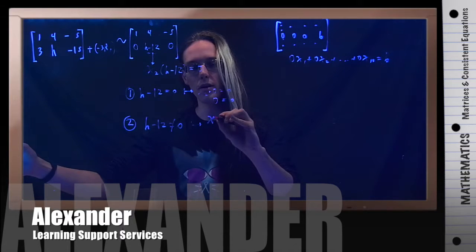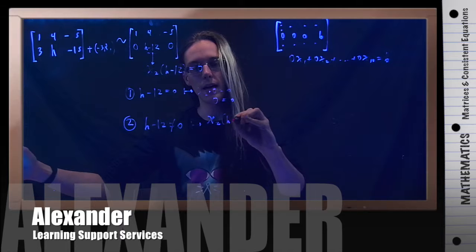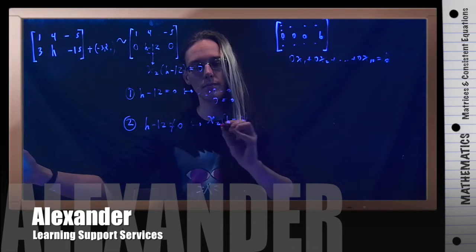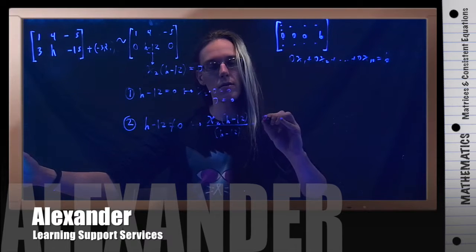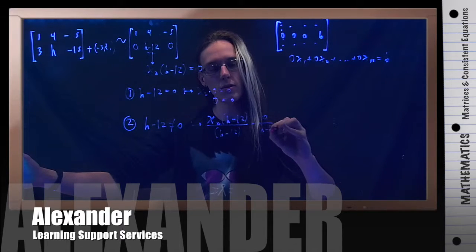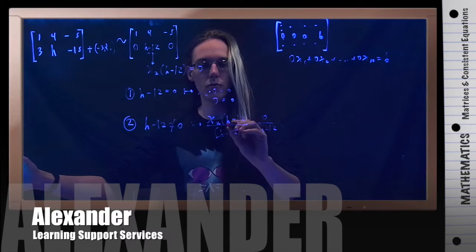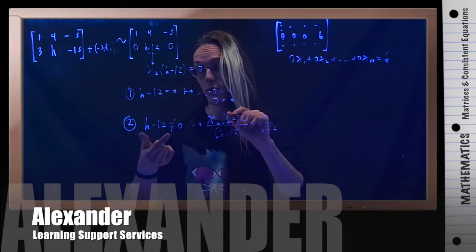So I could solve the equation x2 times h minus 12 by dividing both sides of this. h minus 12 equals 0 over h minus 12. Those would cancel, again, because they are not zero. That's what we're assuming here.